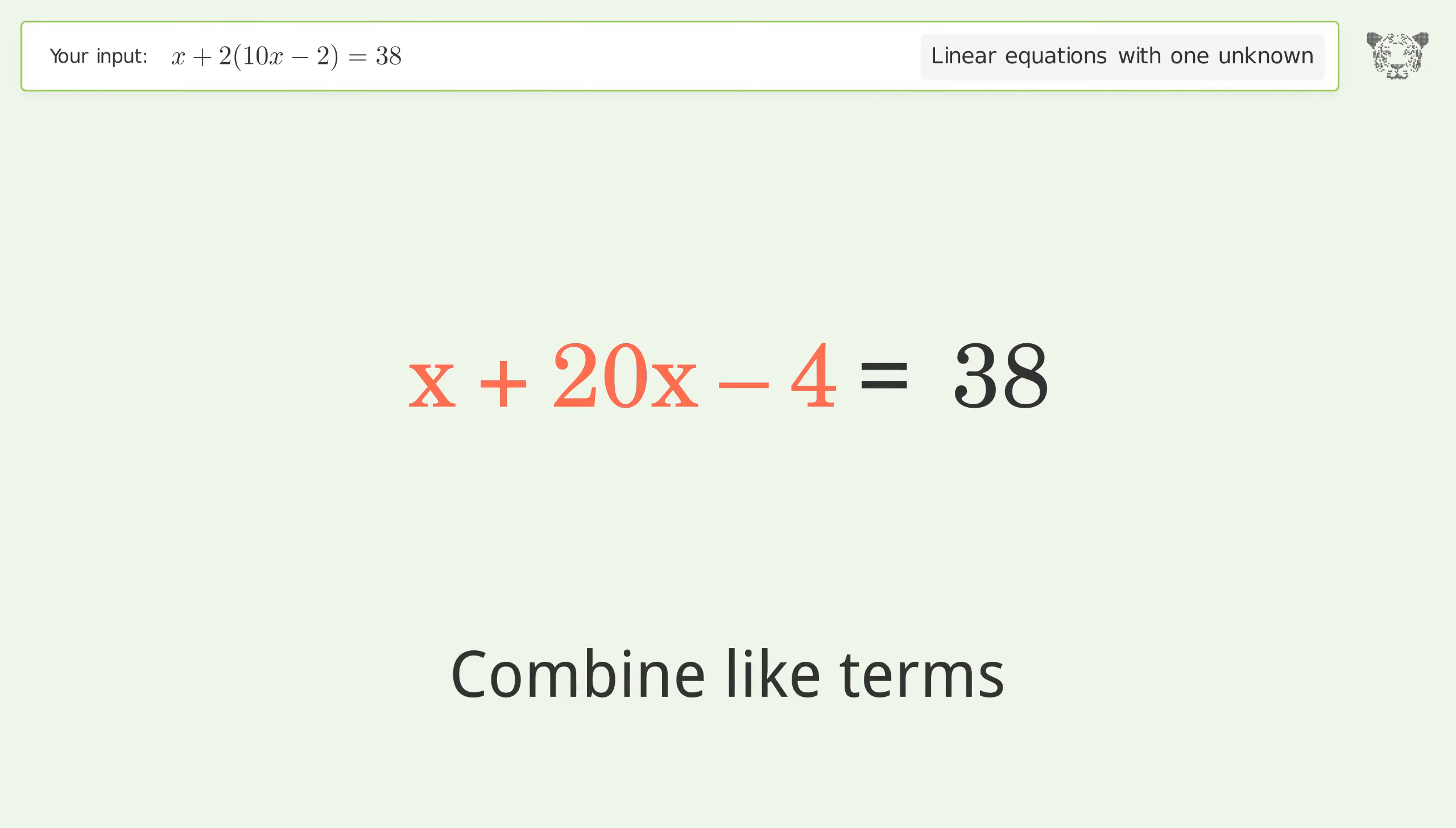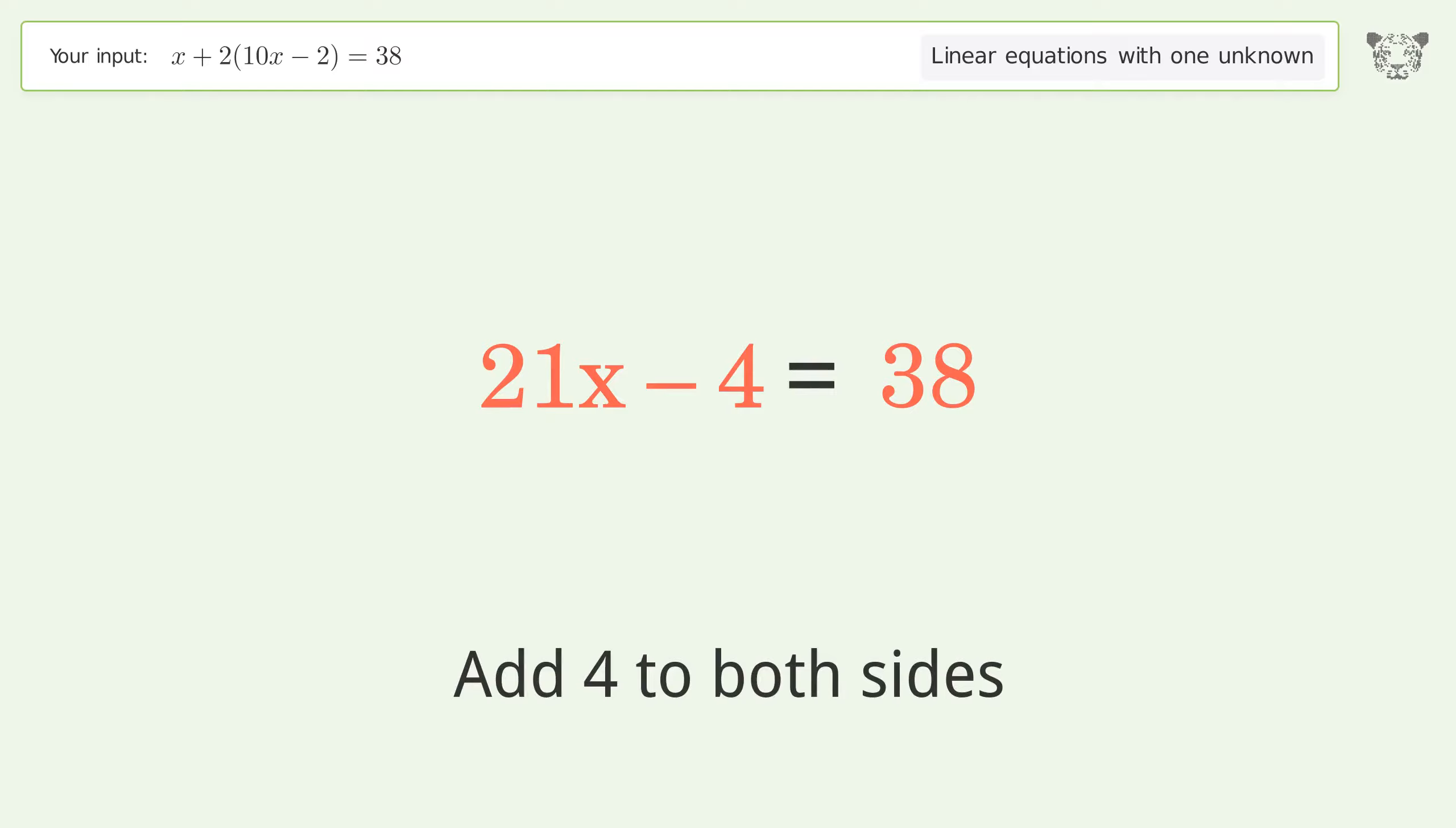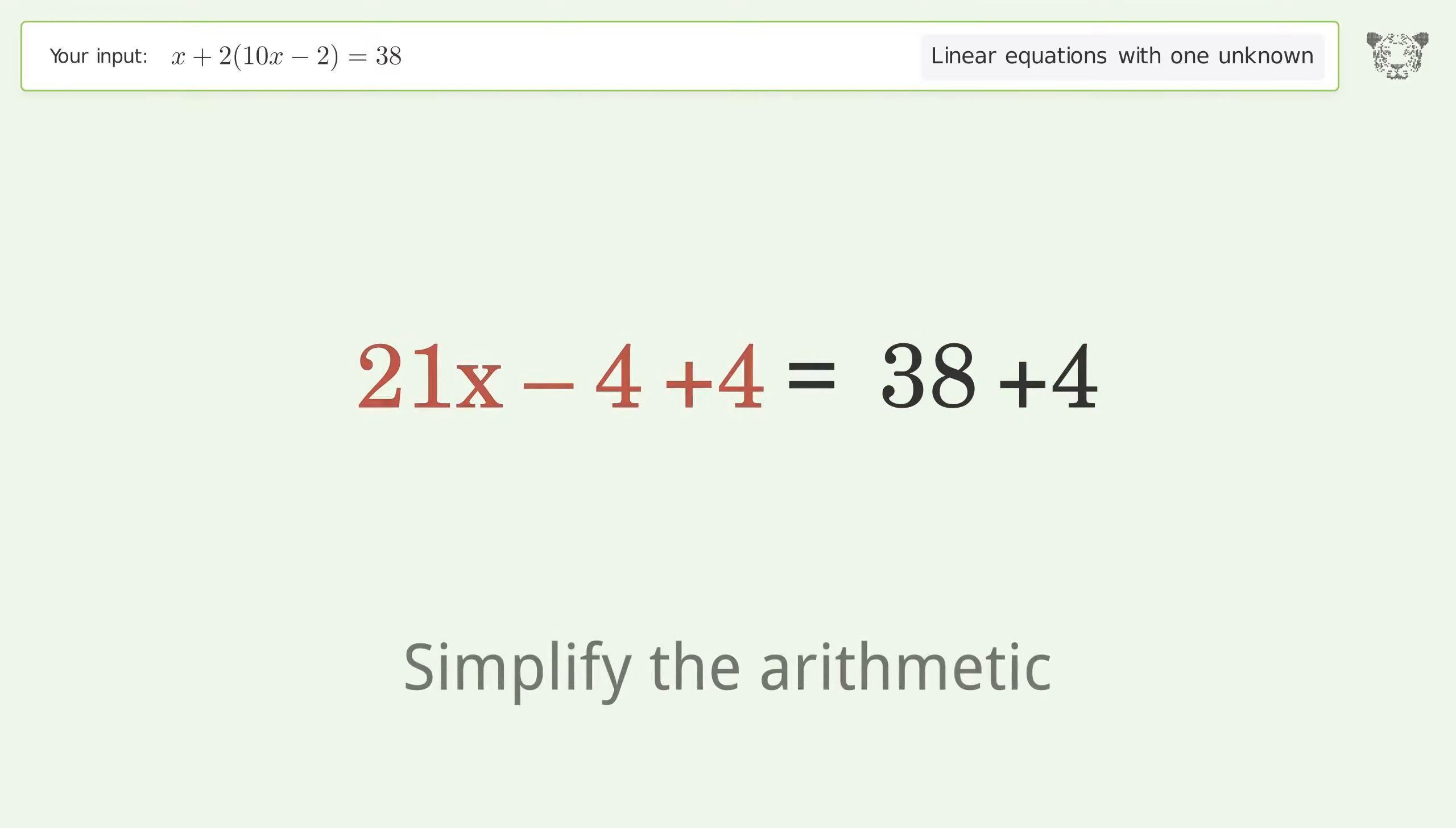Combine like terms. Group all constants on the right side of the equation. Add 4 to both sides. Simplify the arithmetic.